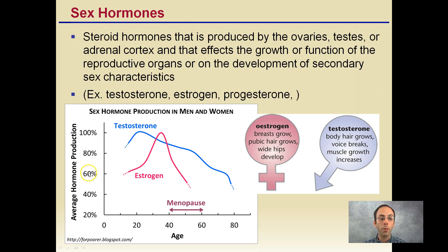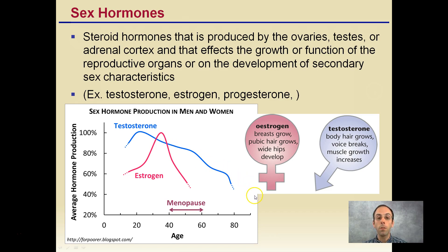We can see this average hormone production over age for sex hormone production in both men and women. It's clearly not consistent over someone's lifespan — at different ages there are certain peaks and drop-offs that occur. Estrogen is typically considered the female hormone and testosterone the male hormone, even though they occur in both genders.